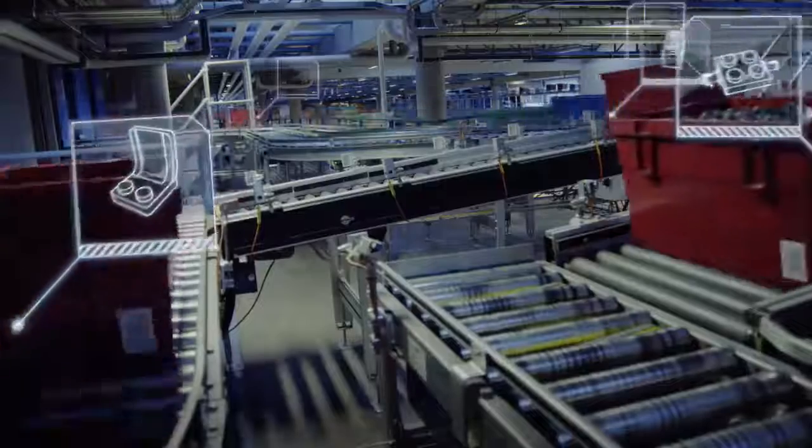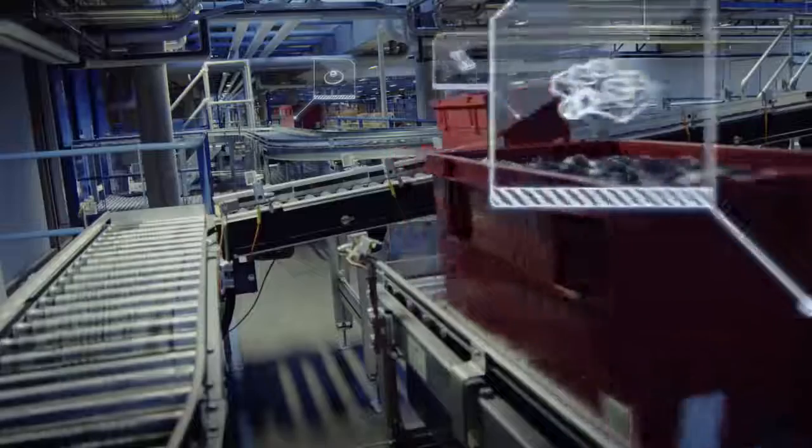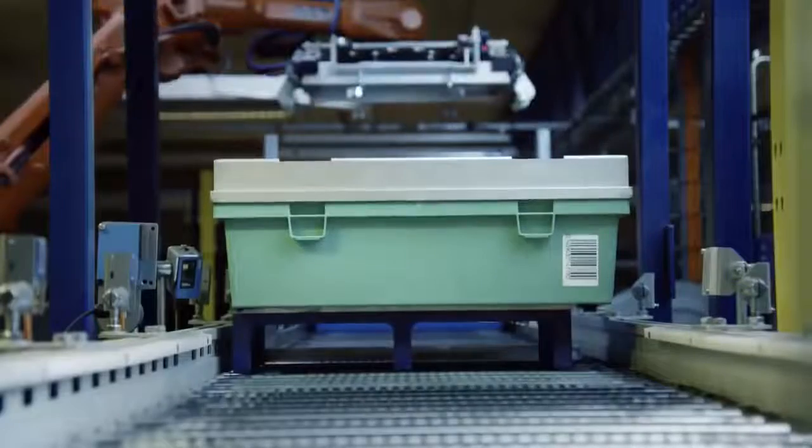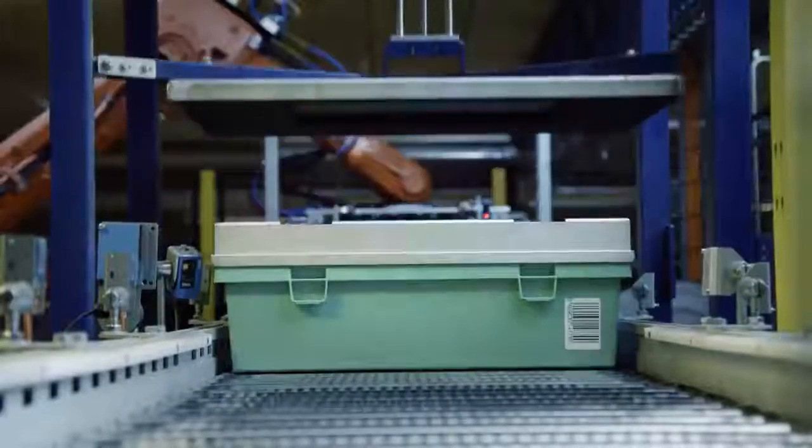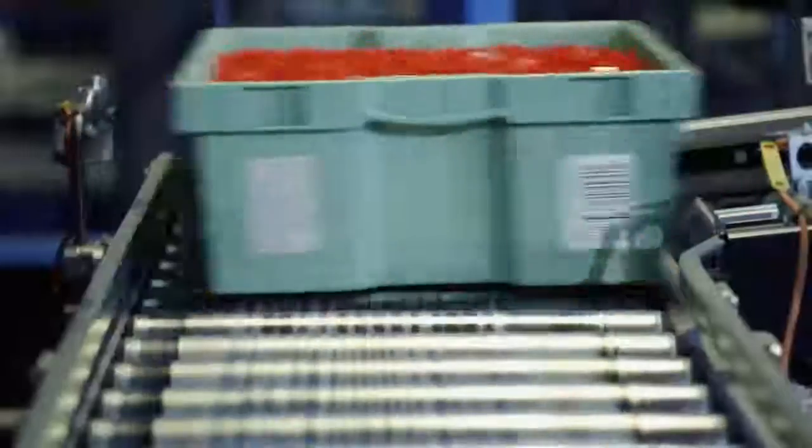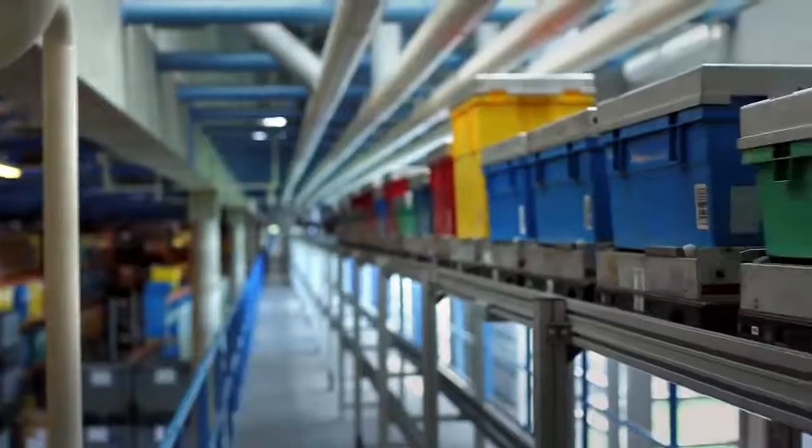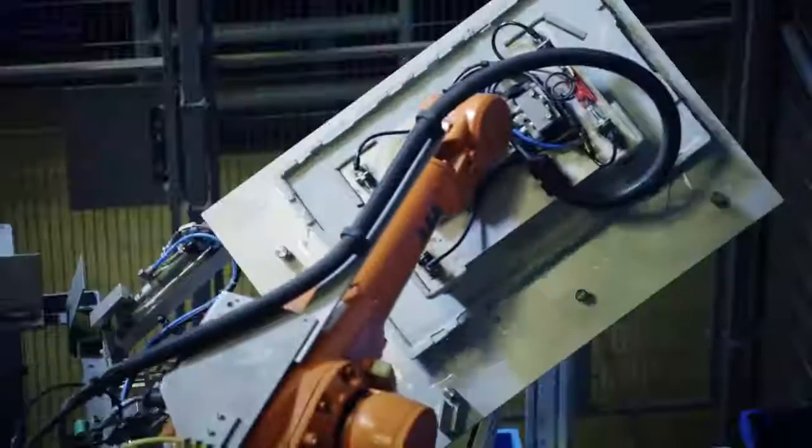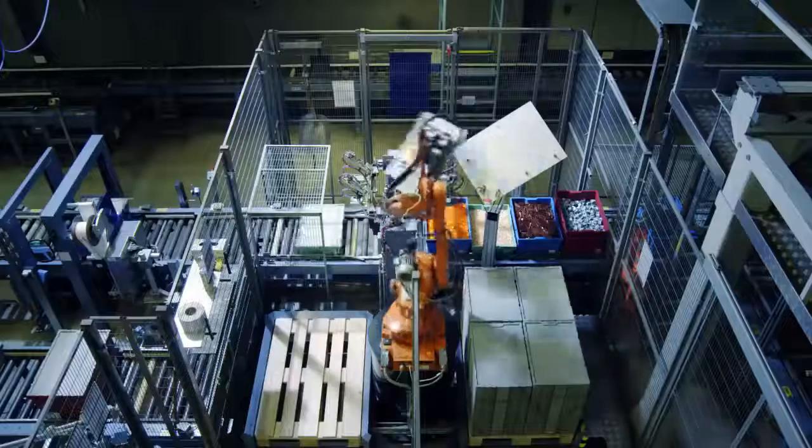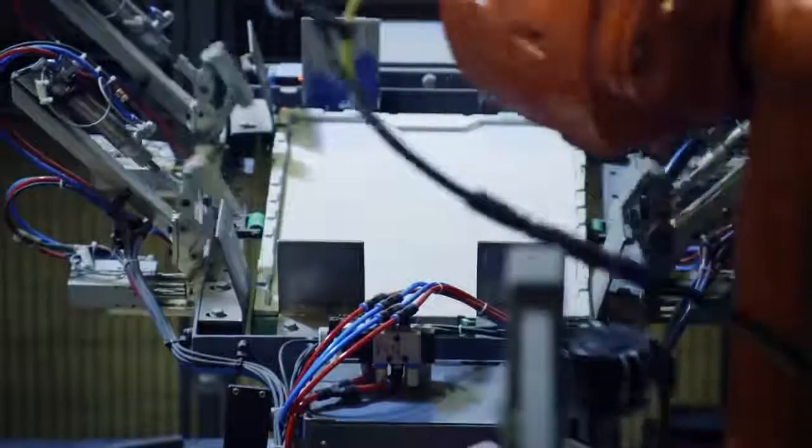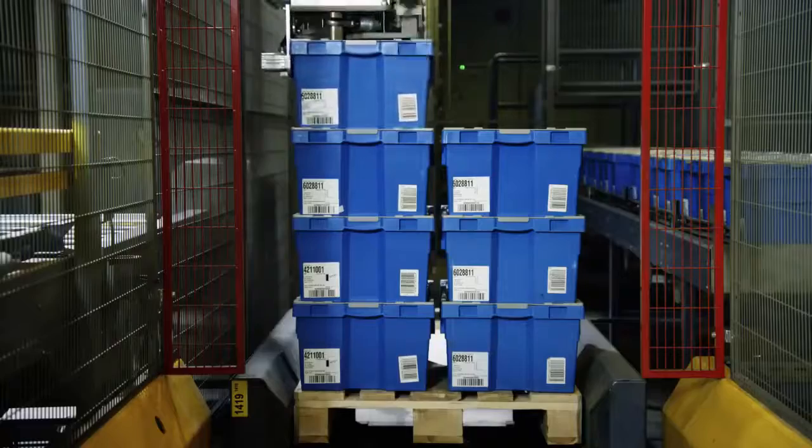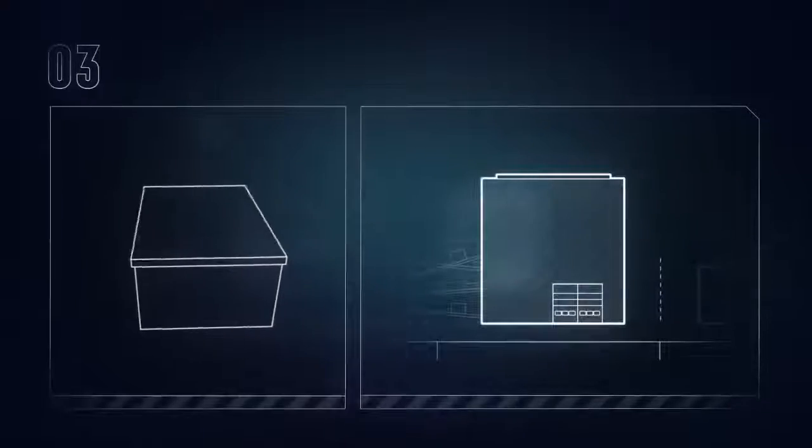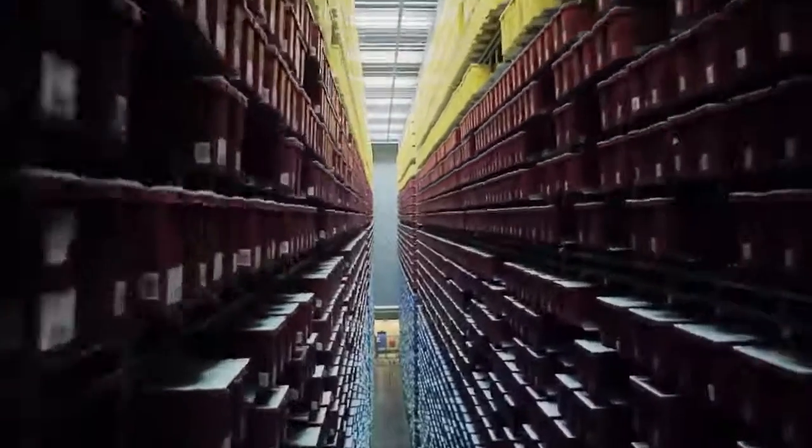A unique barcode identifies the contents of each box. The boxes are shaken to even out the content, ensuring it takes up as little space as possible. Now the lids can be closed. This is where the journey of the boxes ends for now.